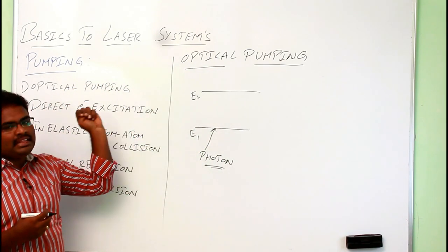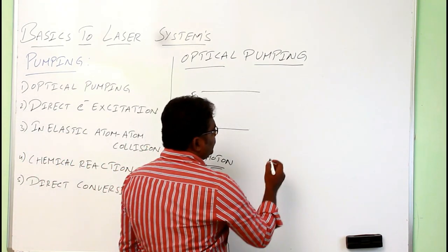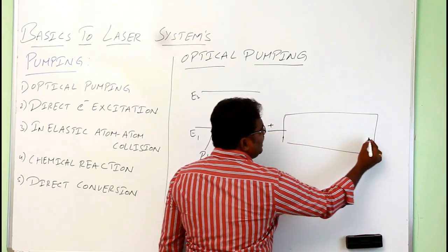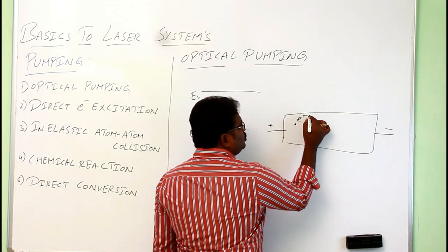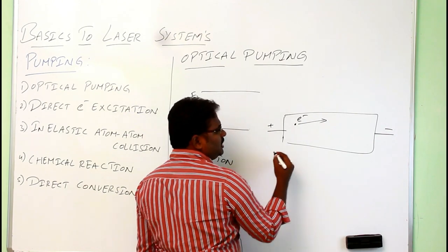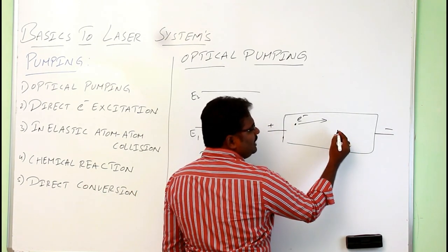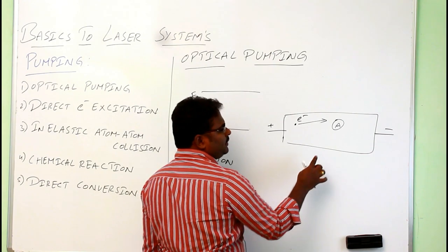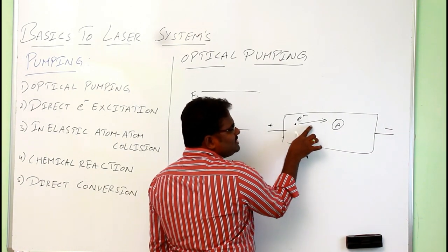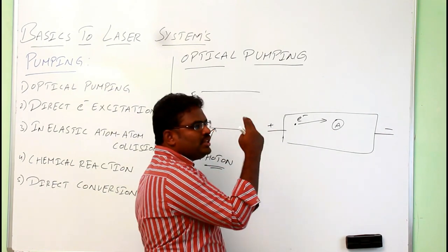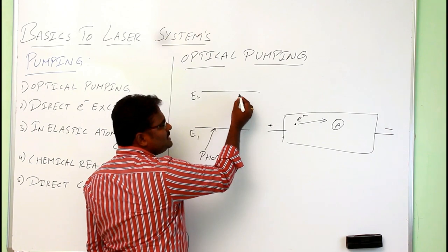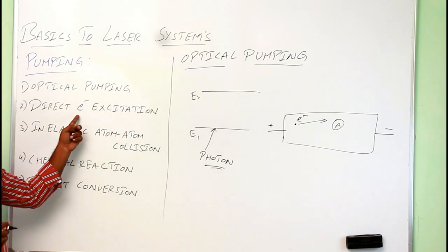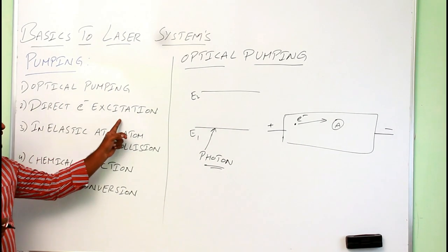The second type is direct electron excitation. Here, we excite electrons by applying a discharge so they move at high velocity. While moving, the fast electron collides with an atom — such as hydrogen, helium, or neon — which is in the ground state. The atom absorbs the energy and goes to the excited state. Since we are sending atoms from ground state to excited state using electrons, this is called direct electron excitation.